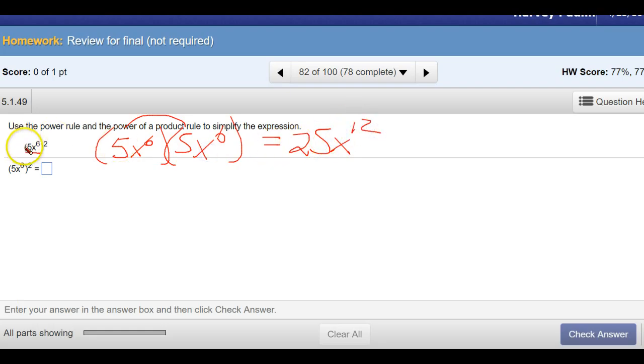And this would be 25x to the twelfth. But the shortcut here is, remember, there is a 1 as an exponent by the 5, so this will be 5 to the second power, which is 25, and then x 6 times 2, which is the 12. So this would be 25x to the twelfth.